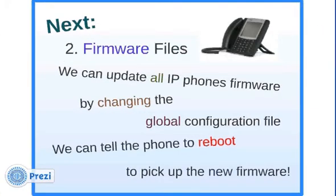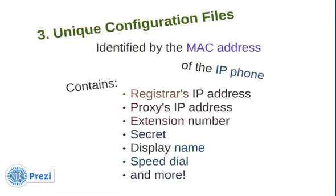Next are the firmware files. We can update all IP phones' firmware by changing the global configuration file to say upload this firmware, and we can tell the phones to reboot to pick up the new firmware. There's software like endpoint managers and provisioning software that can tell all the phones to reboot with the new firmware — you do this after hours so you don't interfere with regular telephone conversations.